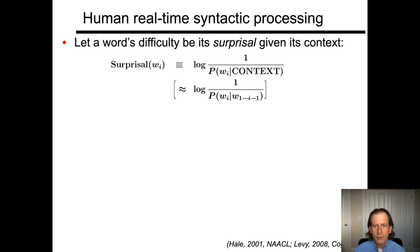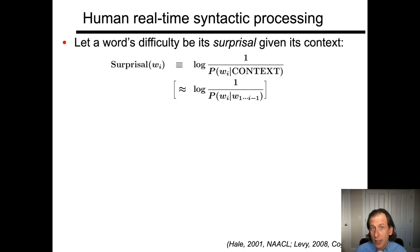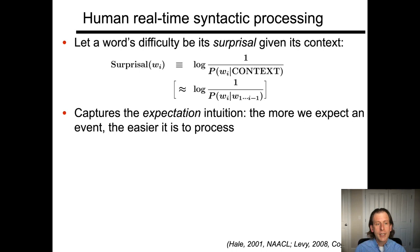To remind you, surprisal is the log of the inverse of the conditional probability of a word in its context. In the special case of isolated sentence reading, where we present a sentence in isolation as we often do in psycholinguistic experiments, the context might be just the preceding words in the sentence. But more generally, all sorts of information might be relevant — things like the larger discourse context, knowledge of your interlocutor, the visual environment, and so forth. Surprisal captures a very basic idea: the more we expect an event, the easier it is to process.